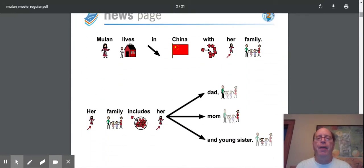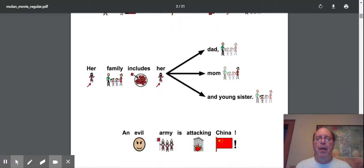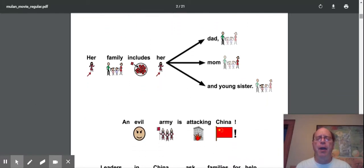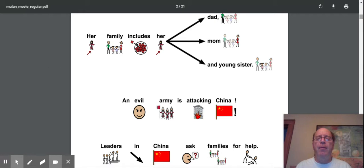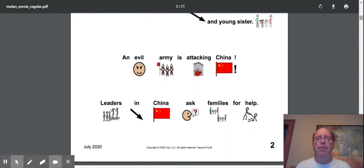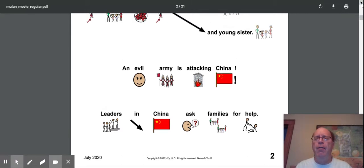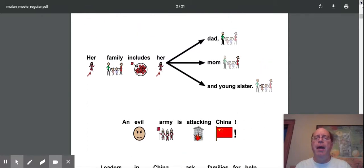Mulan lives in China with her family. Her family includes her dad, mom, and younger sister. An evil army is attacking China. The leaders in China asked families for help. So I wonder who's attacking them and where's this evil army from and how could the families help? That's going to be another question I would ask. How are the families actually helping them? And her family includes a dad and a mom and a younger sister.